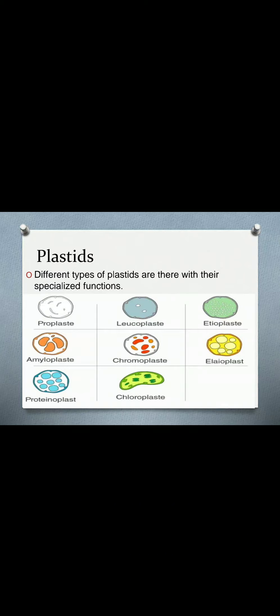Plastids can be classified according to their pigment content. Chromoplasts contain carotenoids, which give yellow, orange, or red color and are responsible for the coloration of flowers, fruits, and vegetables — for example, the yellow color of mango or the red-orange of carrots. Another example is golden rice. Leucoplasts are non-pigmented plastids responsible for the manufacture and storage of starch and lipids; amyloplasts and etioplasts fall under this category.